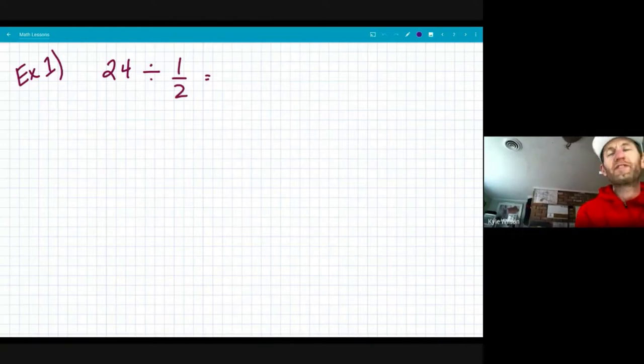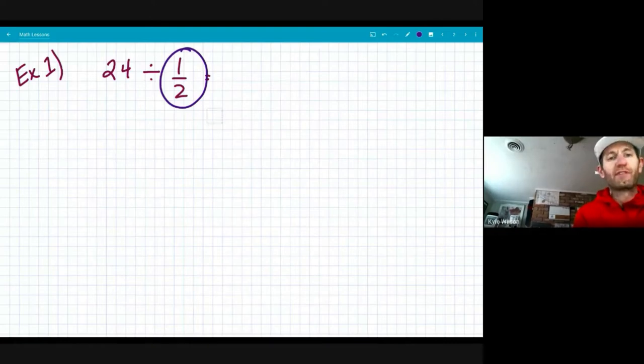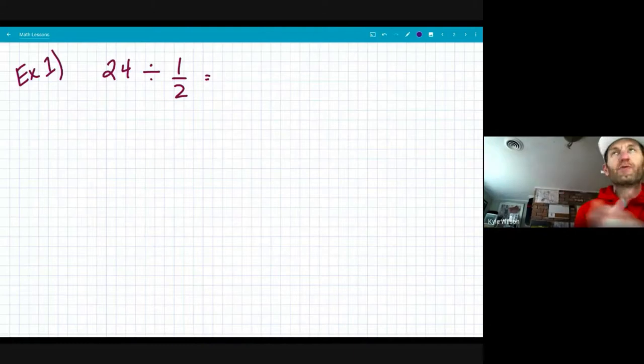First problem is 24 divided by one half. Already, right off the bat, I know that one half is a unit fraction because there is a one in the numerator. And that's a clue that's going to tell me that the answer is actually going to be a whole number.